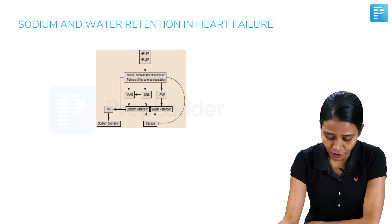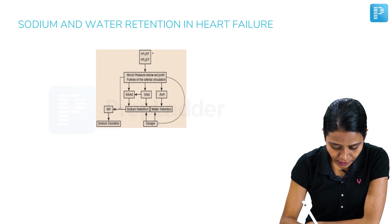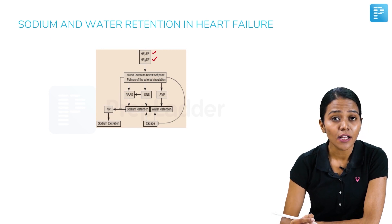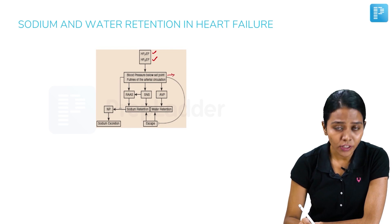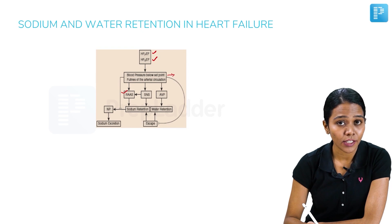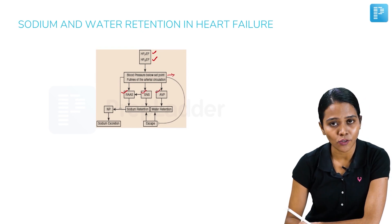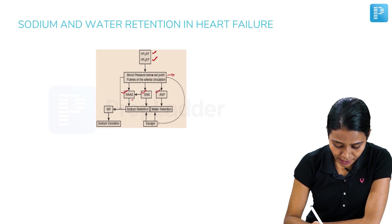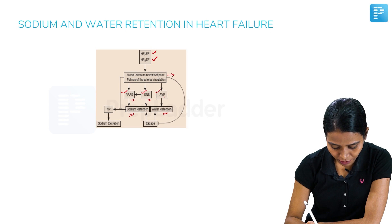Coming to the secondary causes of renal sodium retention — first, let us deal with heart failure. In heart failure, whether it is preserved or reduced, cardiac output reduces below a set point. This leads to reduced GFR and activates the renin-angiotensin-aldosterone system, sympathetic nervous system, and arginine vasopressin. When RAAS and the sympathetic nervous system are activated, there is sodium retention, and when AVP is produced, there is water retention.